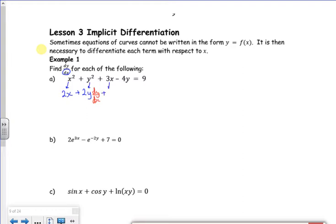The 3x, well, that just becomes a 3. The minus 4y becomes a minus 4. But once again, because I've differentiated with respect to x, but that's y, I put a dy by dx next to it. Then if I differentiate 9, that becomes 0.